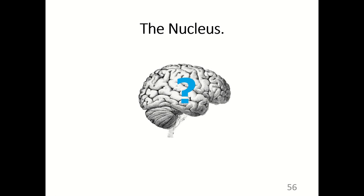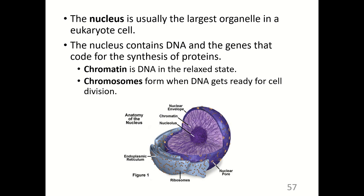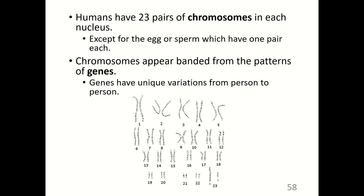The nucleus is usually the largest organelle in a eukaryote cell. It contains DNA and the genes that code for the synthesis of proteins. Chromatin is DNA in the relaxed state; chromosomes form when DNA gets ready for cell division. The nucleolus is where ribosomes are synthesized. Humans have 23 pairs of chromosomes in each nucleus, except for the egg or sperm which have one set each. Chromosomes appear banded from the patterns of genes, and genes have unique variations from person to person.